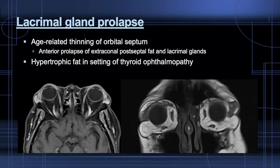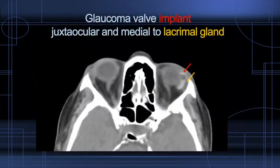Here is a case of prolapsed lacrimal glands, which accompany prolapse of extraconal post-septal fat. This is seen in the setting of aging and thinning of the orbital septum and with overall excess fat deposition, and can be seen often in the setting of thyroid eye disease. Finally, a frequent incidental finding seen at the lacrimal region is a glaucoma valve implant, not to be mistaken for pathology.